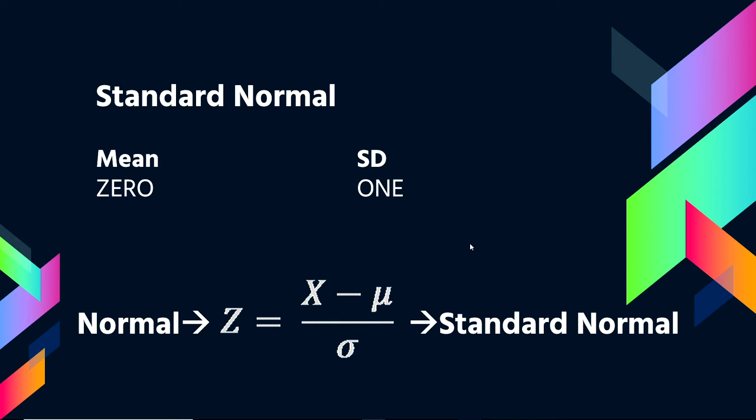And so this is a really kind of easy and intuitive way to understand and compare across distributions. So there is a real use to standard normal scores because they give us an immediate reference.